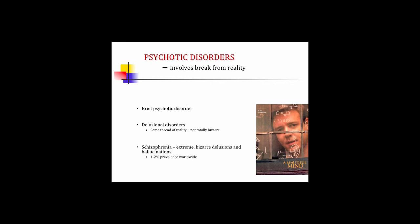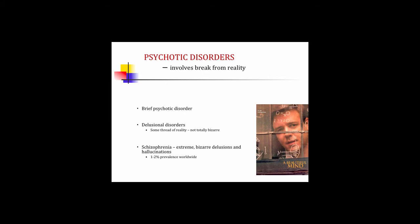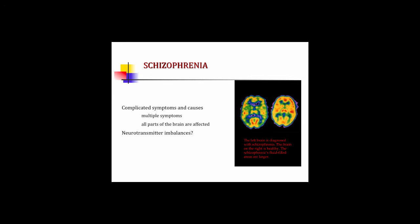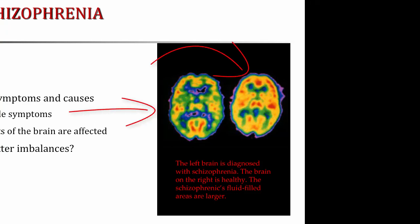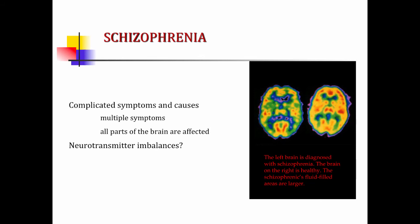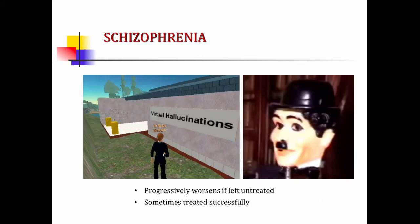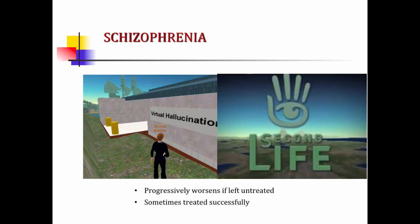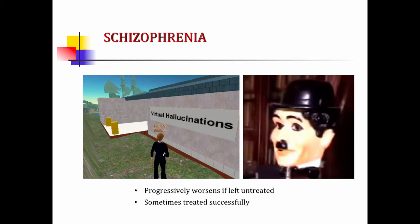Schizophrenia is the most extreme psychotic disorder, involving bizarre delusions and hallucinations — both auditory and visual. Perhaps you've seen A Beautiful Mind with Russell Crowe, about the brilliant scientist John Nash who suffers from schizophrenia. It's a complicated illness with multiple symptoms affecting all portions of the brain. The schizophrenic brain's fluid-filled areas are much larger than a healthy brain. There may also be an imbalance in neurotransmitters. In class, I'll show a clip from Second Life called Virtual Hallucinations showing what an individual with schizophrenia might actually see and hear.